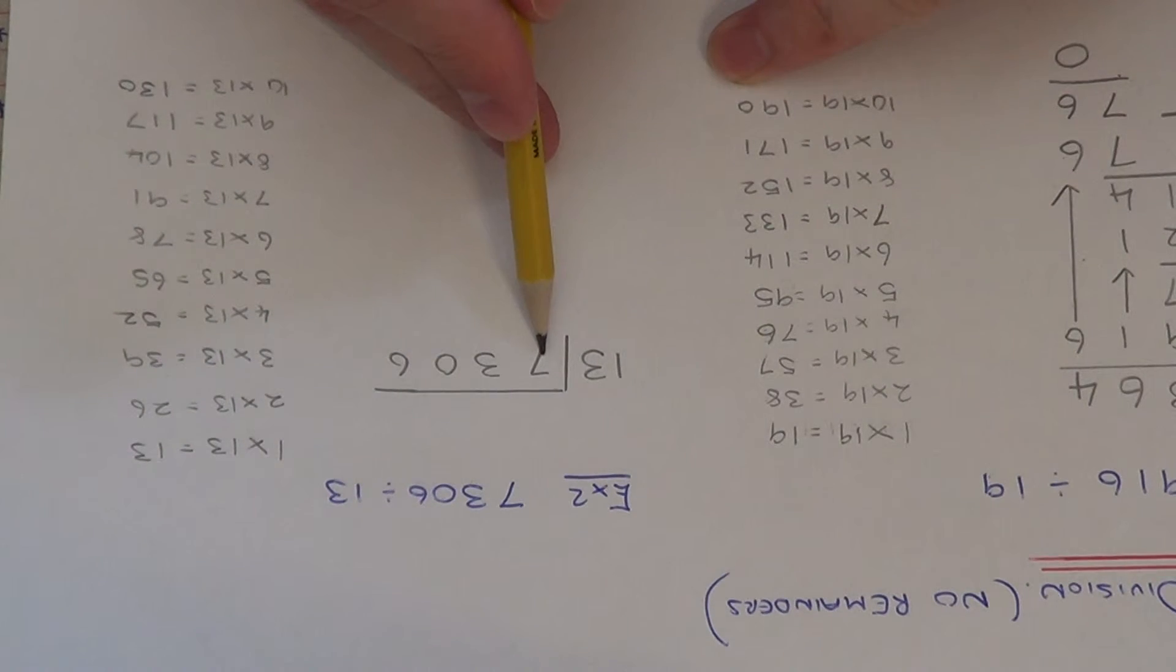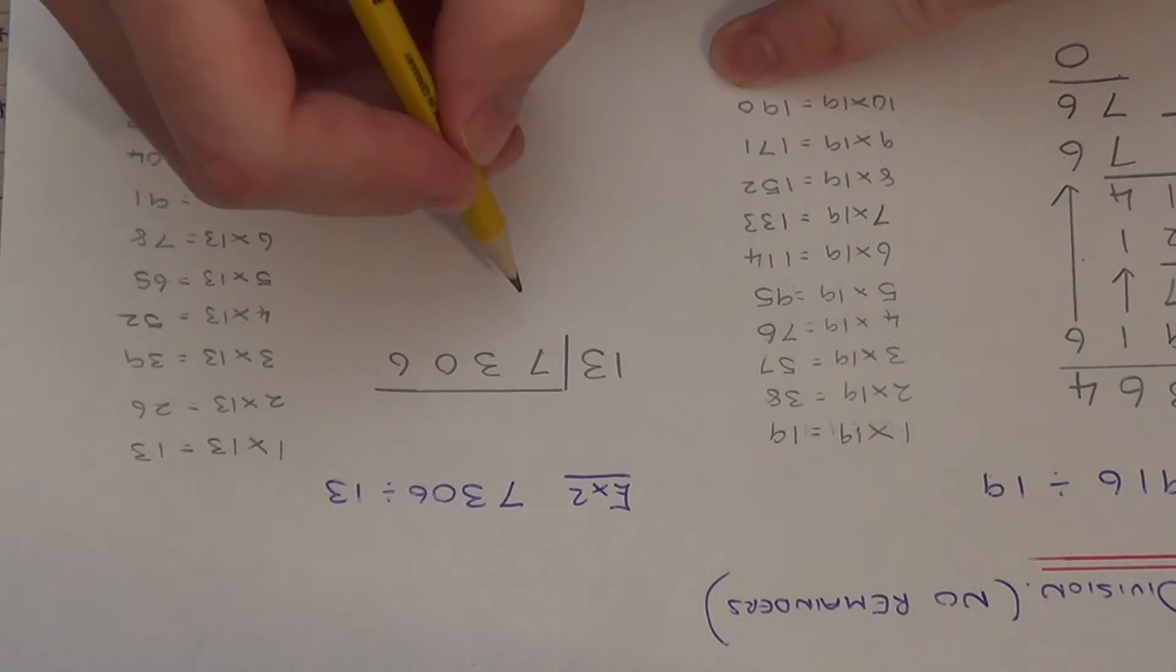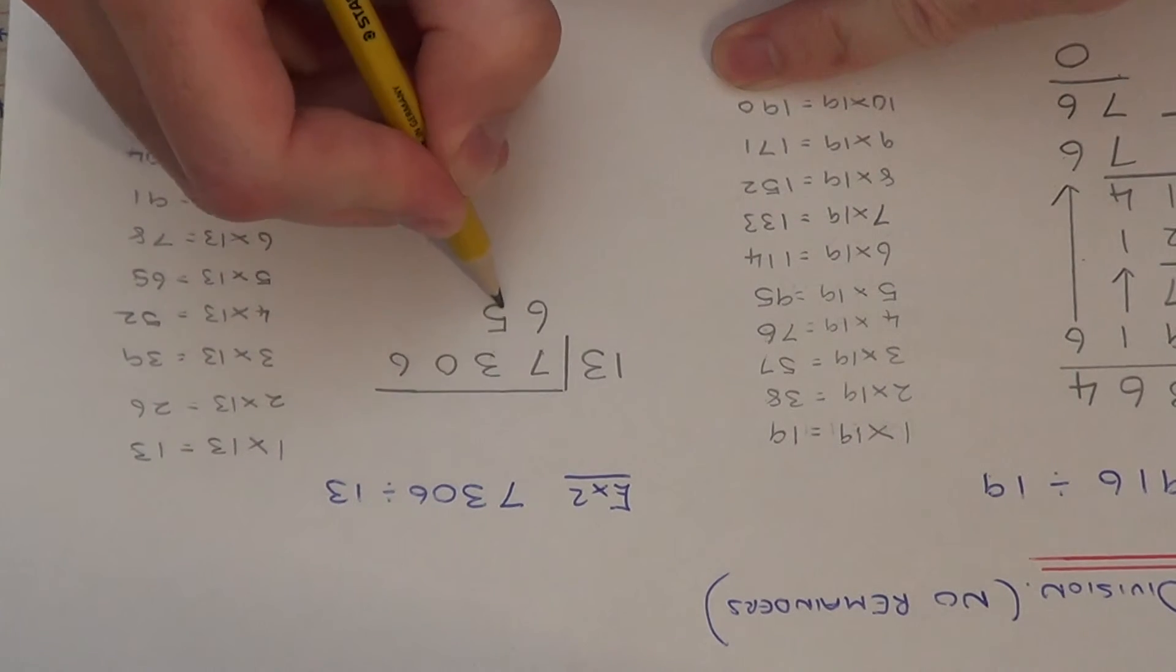So we've got 7,306 and we divide it by 13. So 13s into 7 doesn't go, so we need to do 13s into 73. So if I look at our best multiple of 13, 13, 26, 39, 52, 65, 78 is too big. So 65 is our best one.